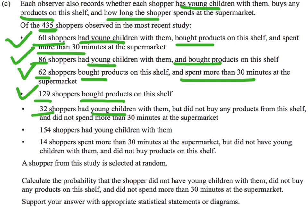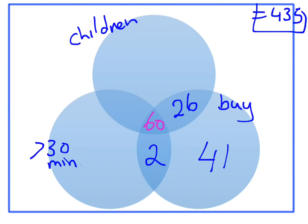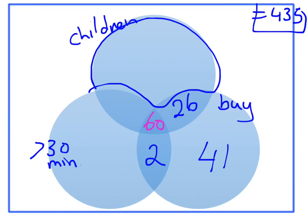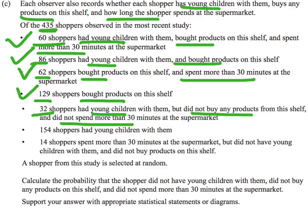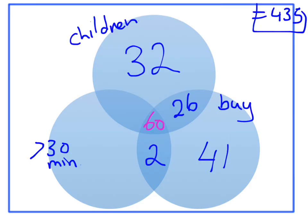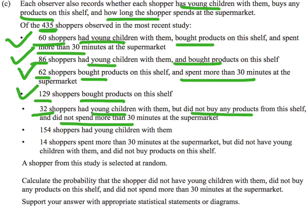Next, 32 shoppers had young children but did not buy any products and did not spend more than 30 minutes. So they're in the children circle only, not overlapping with buying or more-than-30-minutes. That section gets a value of 32.